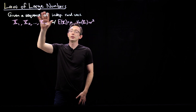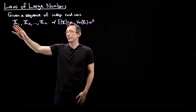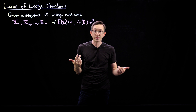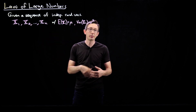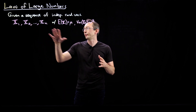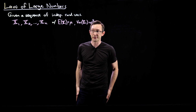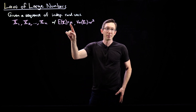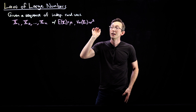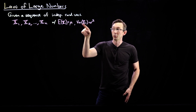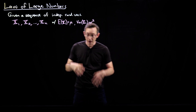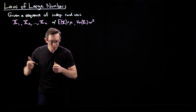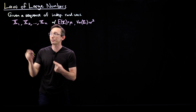Given a sequence of independent random variables — this could be n different coin flips, so n Bernoulli random variables, or n of some other distribution — and let's say that each of these random variables has the same mean μ and the same standard deviation σ or variance σ². Then the statement of the law of large numbers is the following: given this sequence, we can define something called the sample mean.